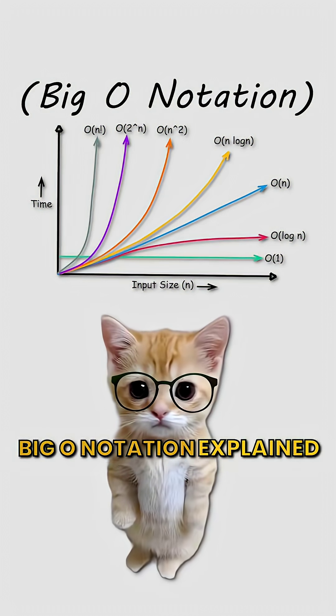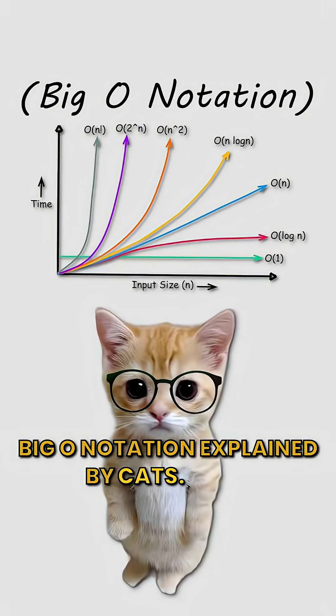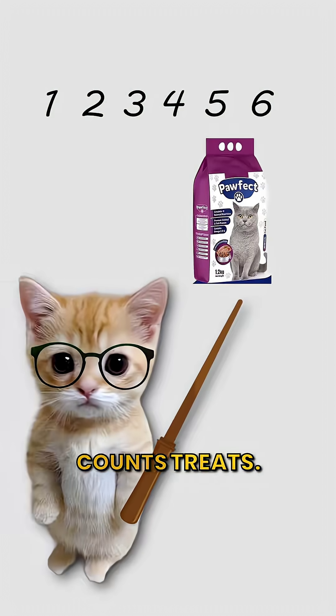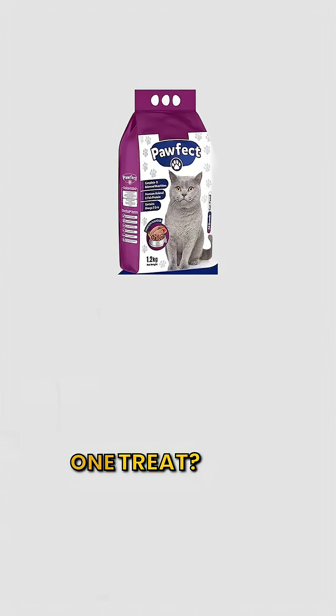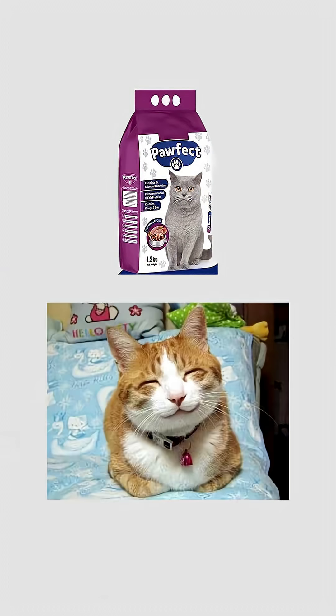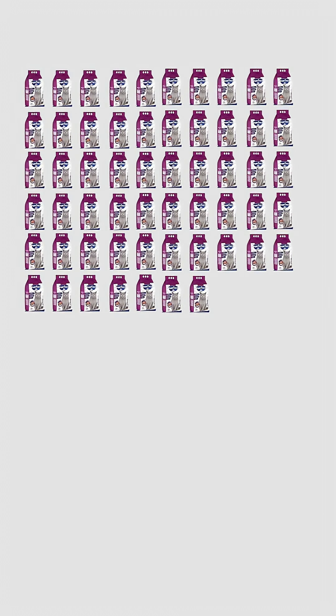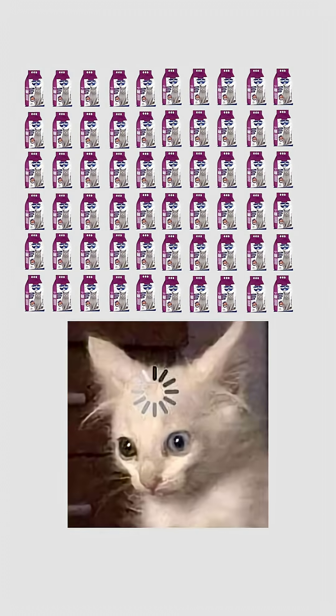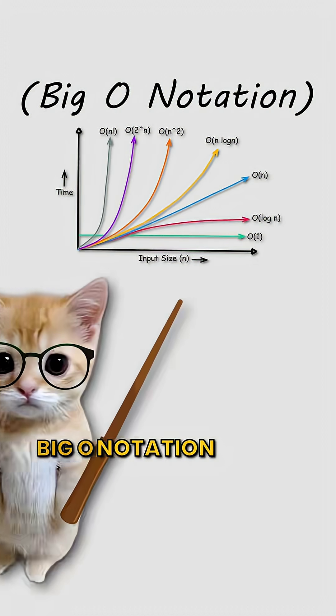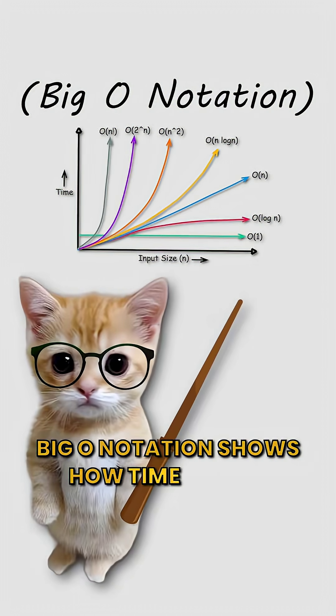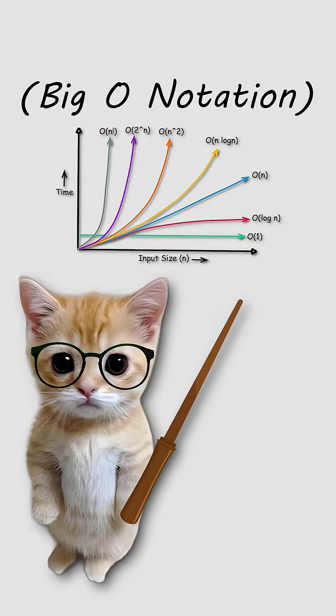Big O notation explained by cats. Kitty counts treats. One treat? Easy. Ten treats? Still fine. A million treats? Forever. Big O notation shows how time grows with size.